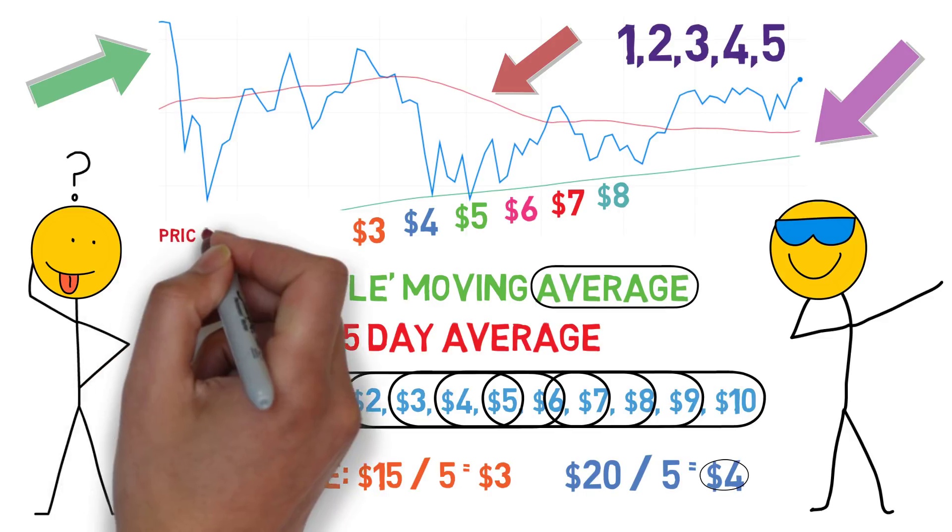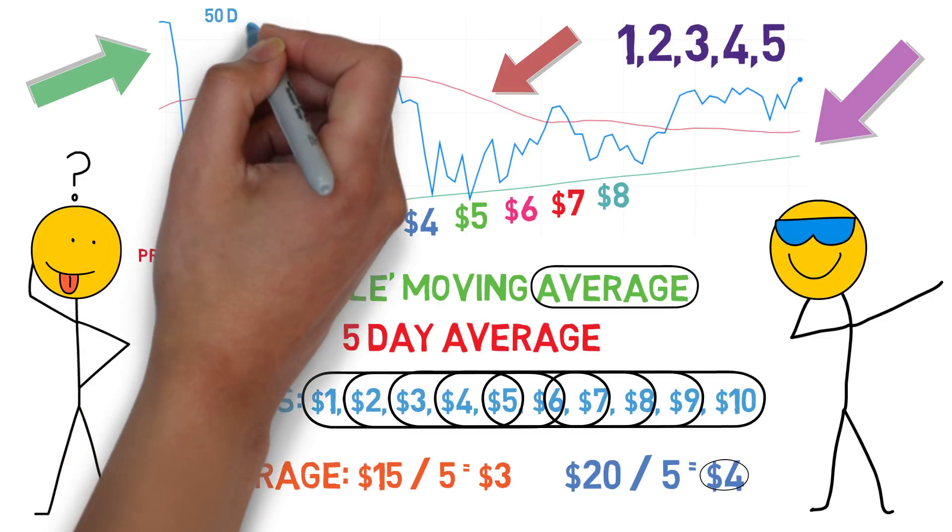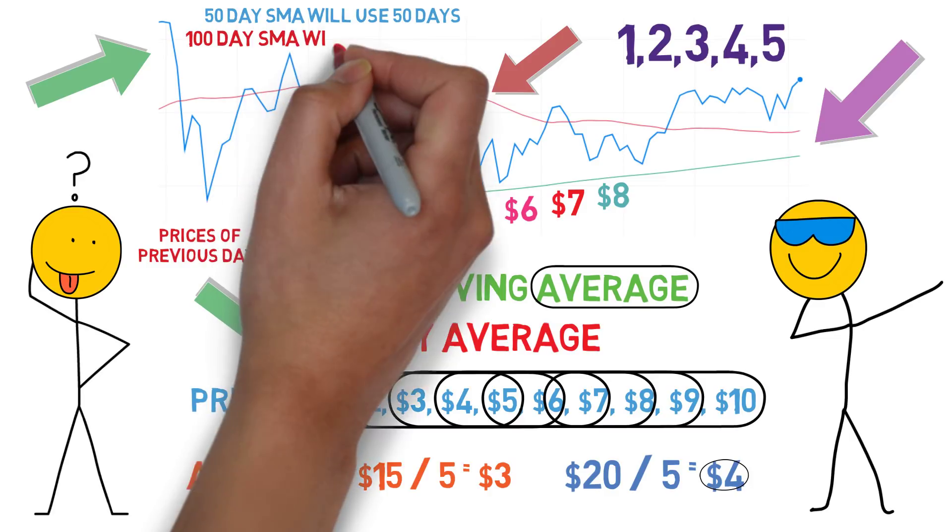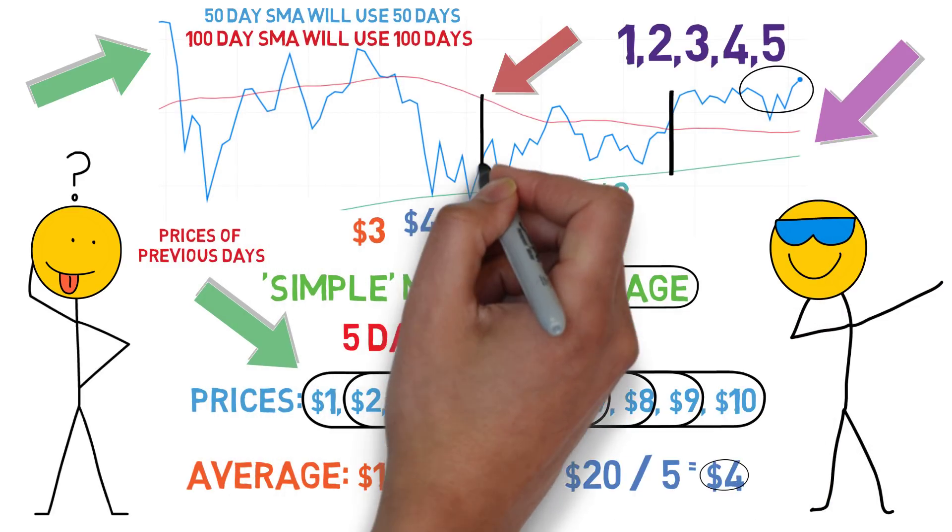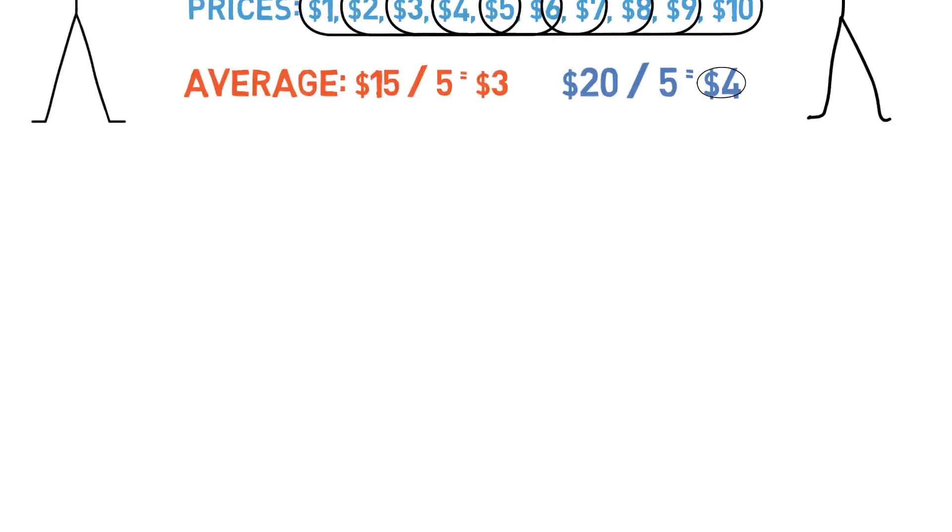This indicator basically uses the stock price for the previous days. If you set the average at 50 days, it'll use all 50 numbers. 100 days will use all 100 numbers. The current indicator price uses the stock's current price all the way back to the number of days you set for the average.